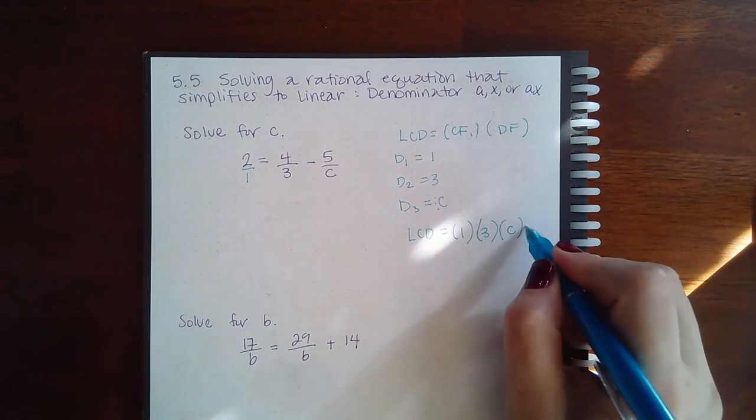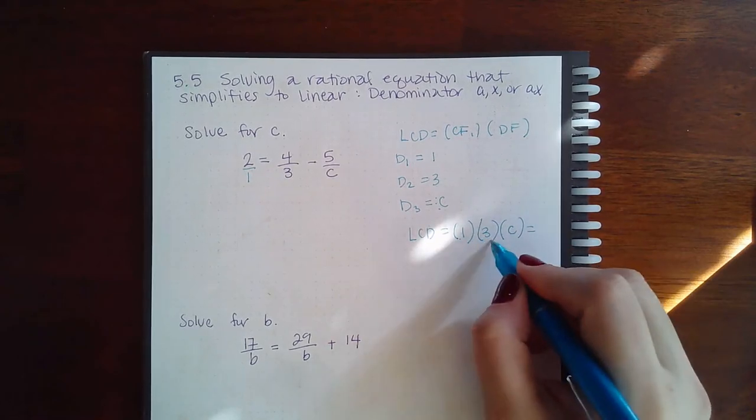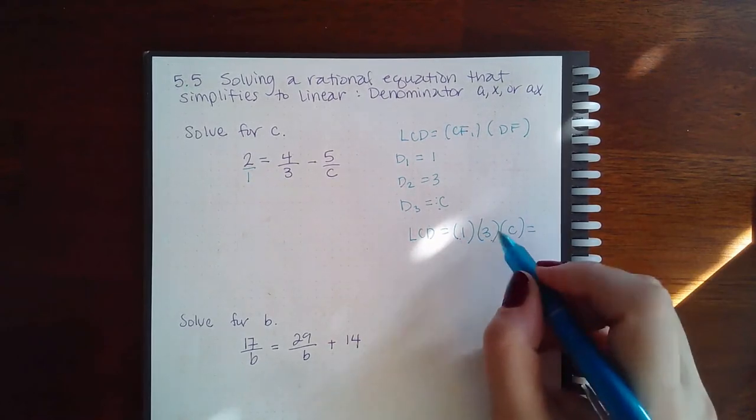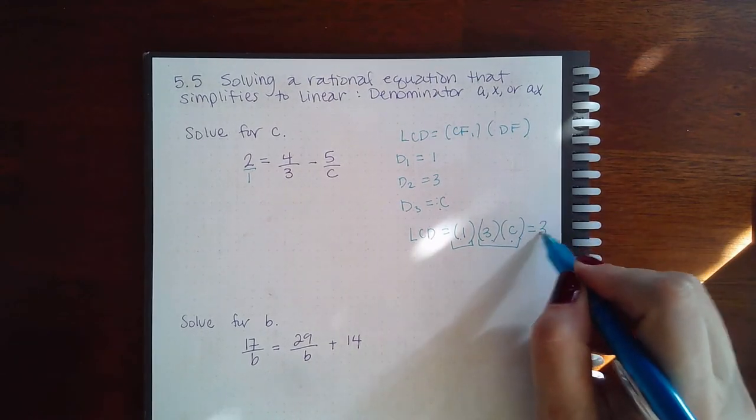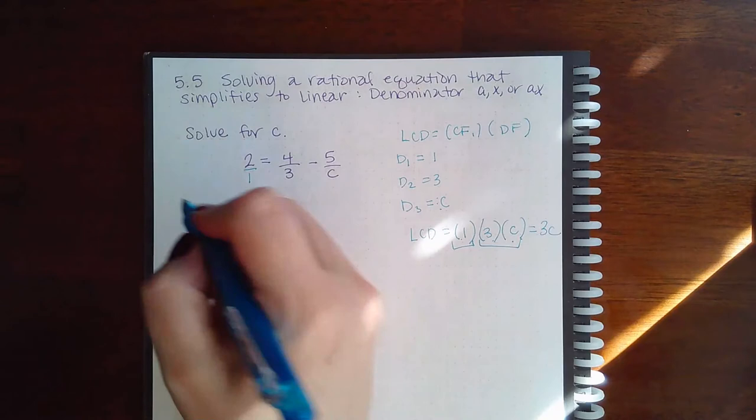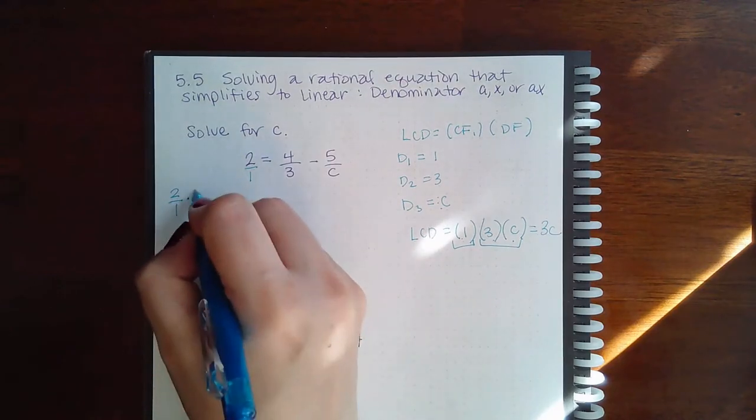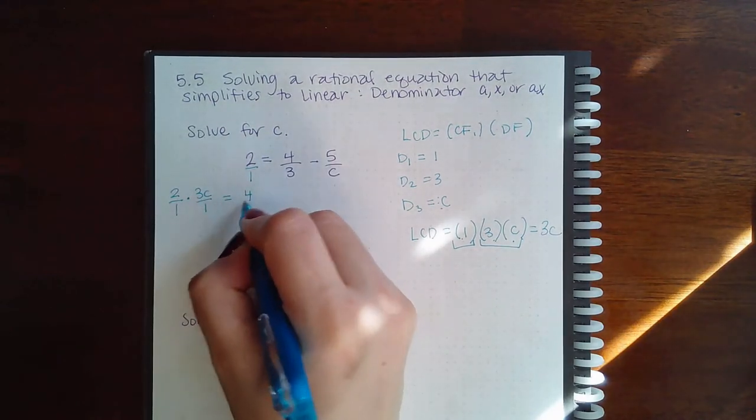So, if I multiply all of this common and uncommon, and these are the common ones, and then these are the distinct ones, we multiply all that together, we end up with 3C. So, I'm going to take every single one of these fractions and multiply it by 3C over 1.